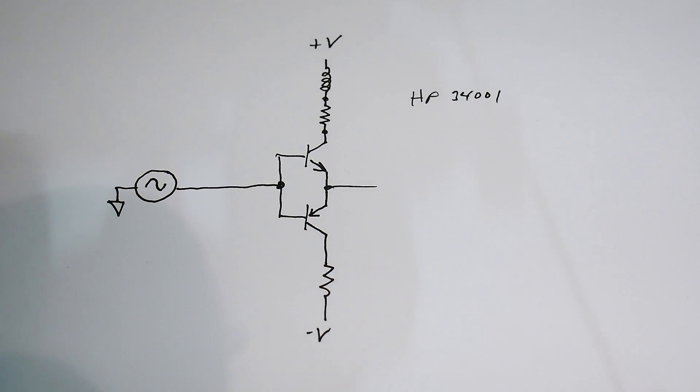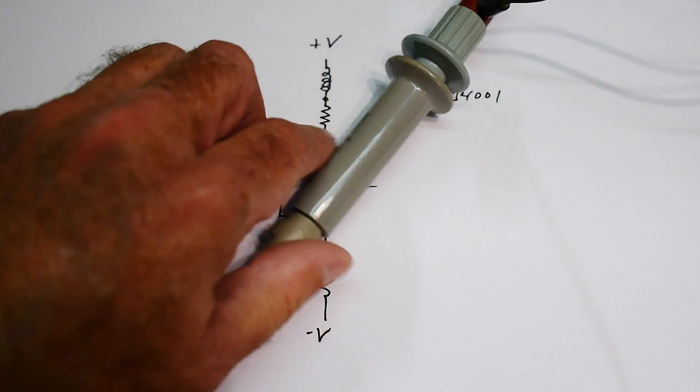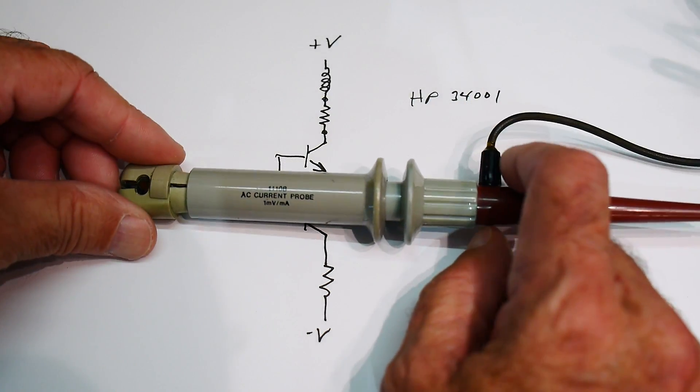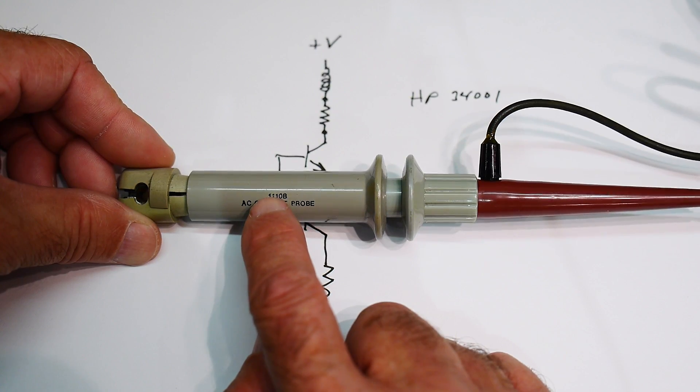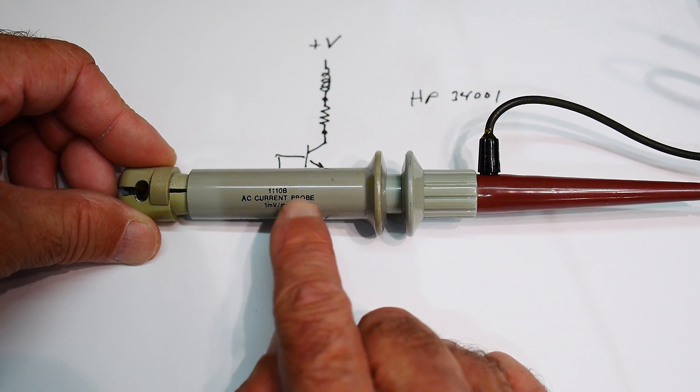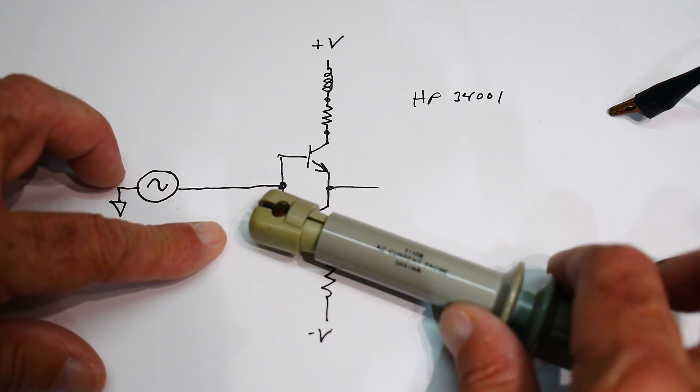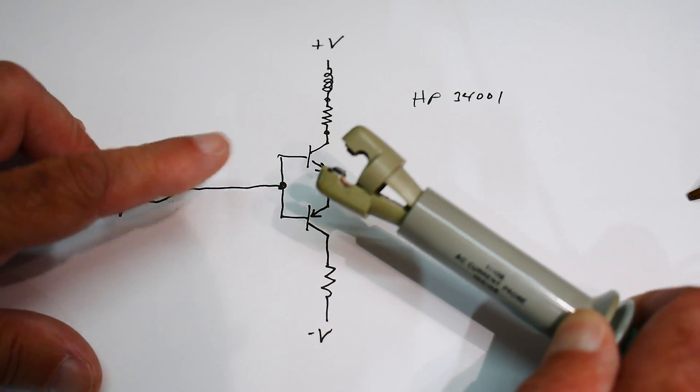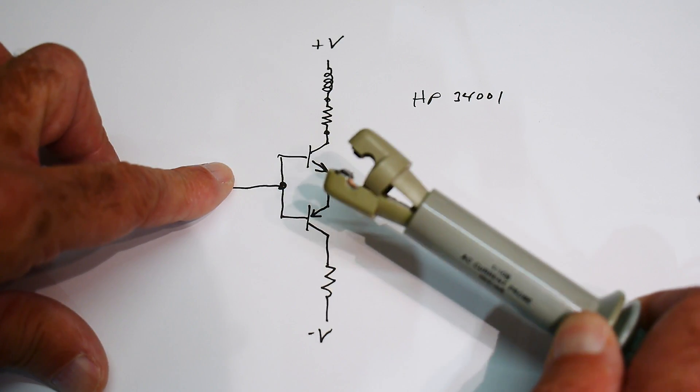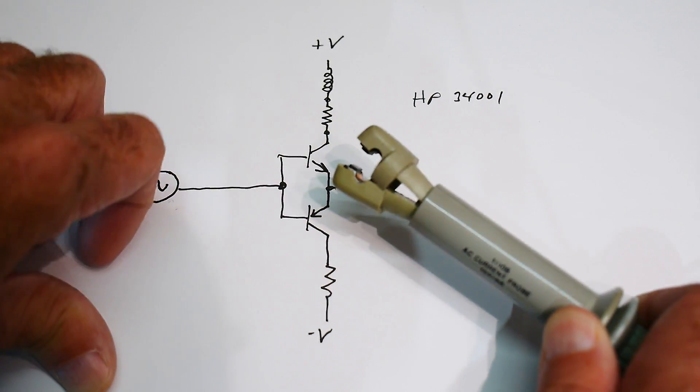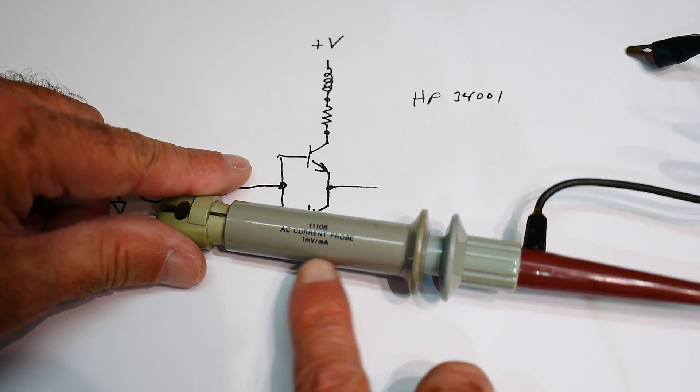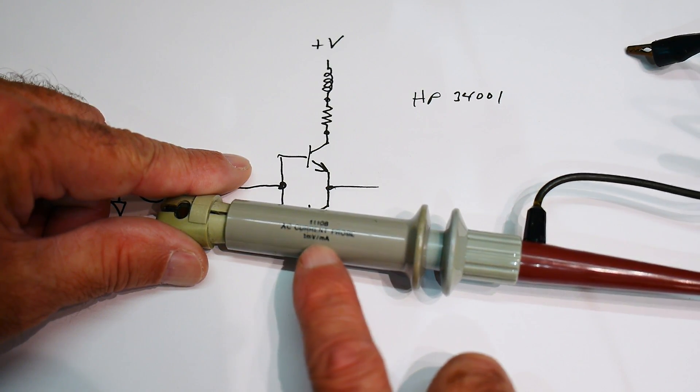But they would allow you to do that, you could clip on to this and measure the AC current. I have an old one. So I have this one, which is a Hewlett-Packard part number 1110B AC current probe. So it has a little opening here, you push just like a regular scope probe, you open this up and it opens up and you can stick in the wire and close it around there.